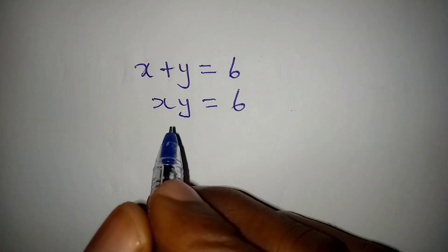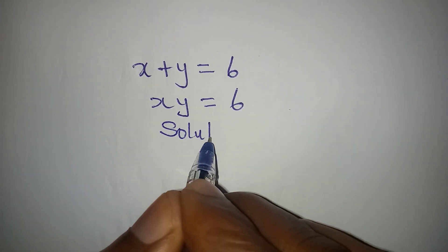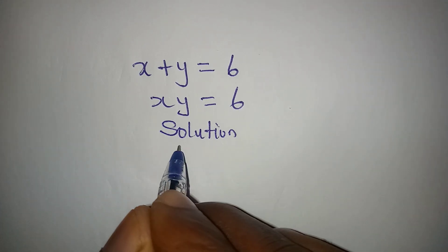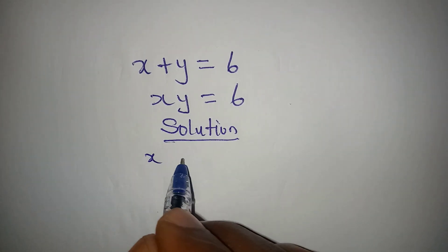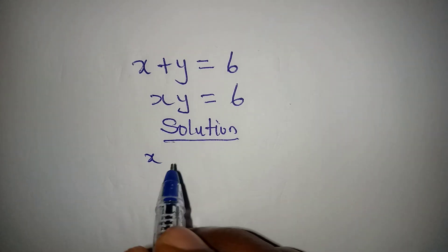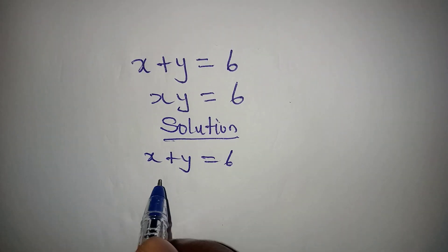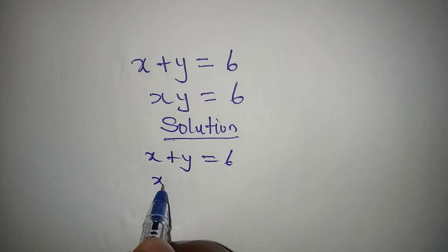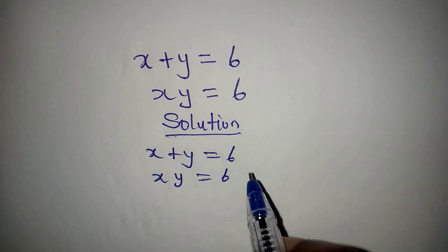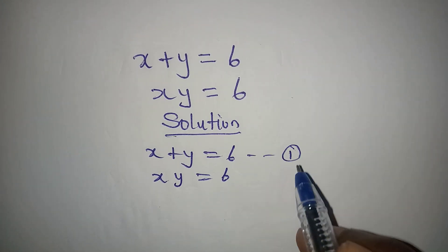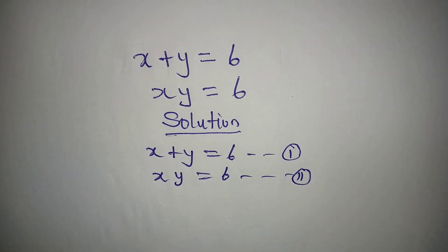Hello everyone, let's provide a solution to this problem. We have x plus y equals 6, and x times y equals 6. Let's call this equation 1 and this equation 2.